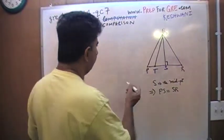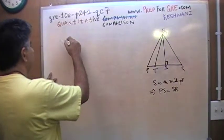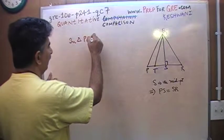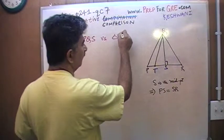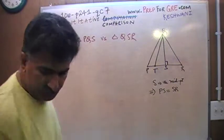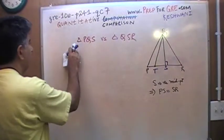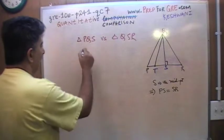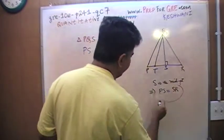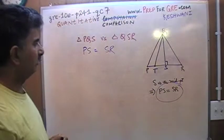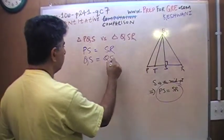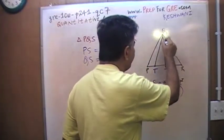Now we're dealing with two triangles: triangle PQS versus triangle QSR. The situation we have is that PS equals SR, and we also know that Q to S, they share this side. This side is shared by the two triangles.